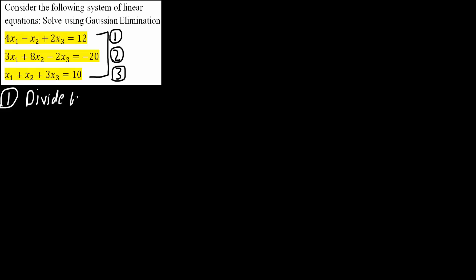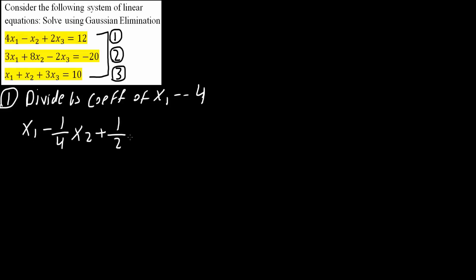The first step is to take equation 1 and divide by the coefficient of x1, which is 4. When we divide the equation by 4, we get x1 minus 1/4 x2 plus 1/2 x3 equals 3. I'll call this equation 1a.